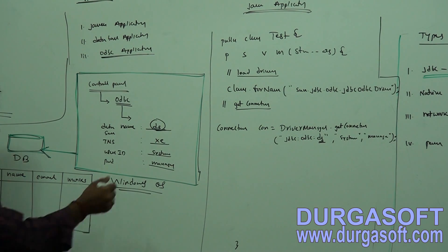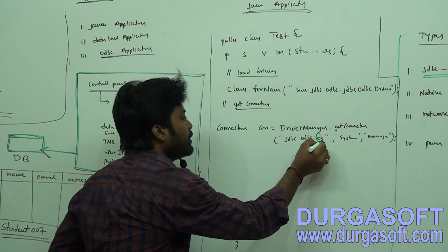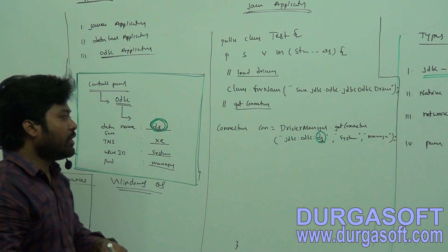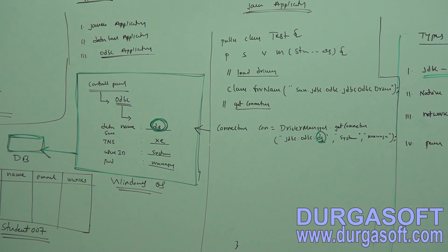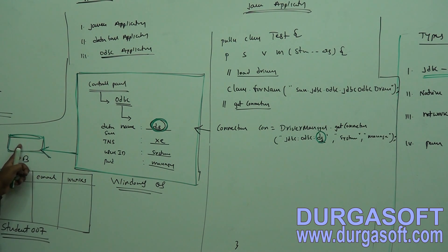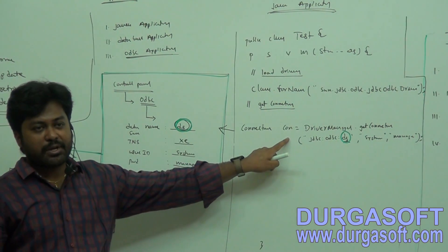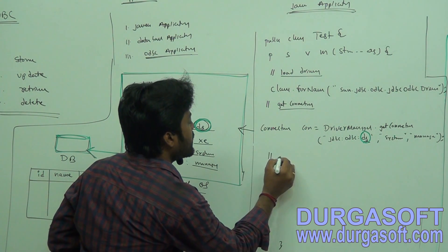The data source name configured here should match exactly. The DriverManager class will talk with your ODBC layer, and ODBC will talk with your database. It will give one connection back through ODBC to the Java application. By using that connection, you can execute statements.